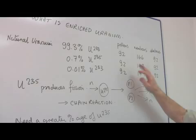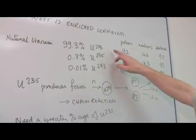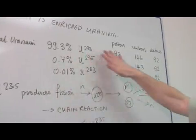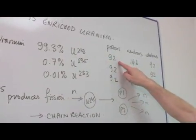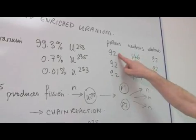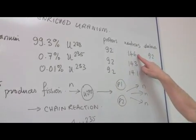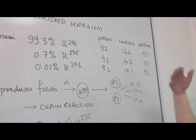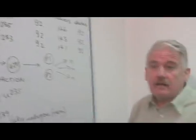Now, the most common one is uranium-238. 99.3% of uranium is uranium-238. It contains 92 protons and 146 neutrons, and of course, 92 electrons if it's in a neutral state.